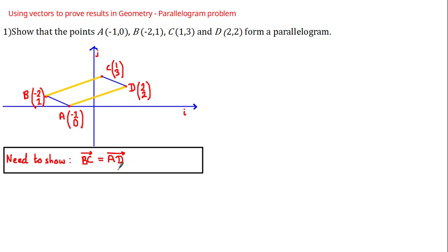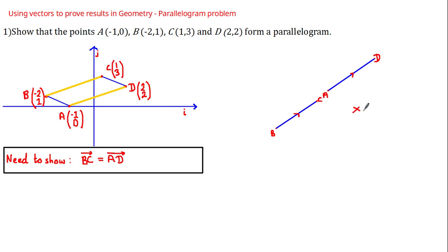However, this equation on its own is not enough to prove that shape ABCD forms a parallelogram, because if we assume those vectors are equal, they could actually lie on the same line — they could be collinear vectors — and that would not form a parallelogram. So we also need to show that the other pair of opposite sides are both parallel and equal in length.